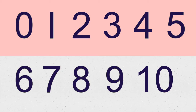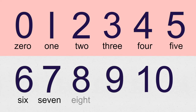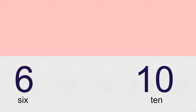But today we are going to be writing words like zero, one, two, three, four, five, six, seven, eight, nine, and ten. I think it would be better to start with the easiest ones, and I think the easiest ones are six and ten.